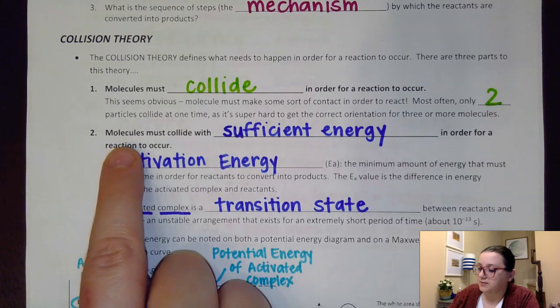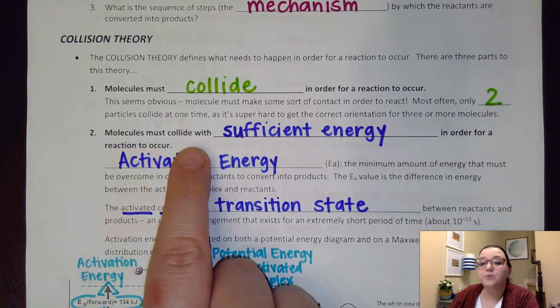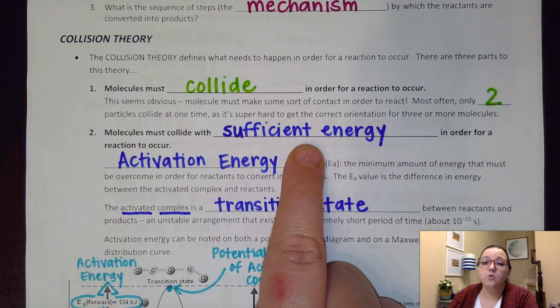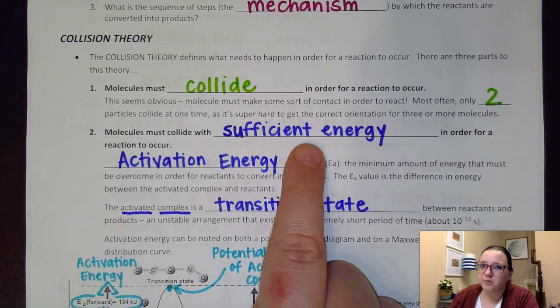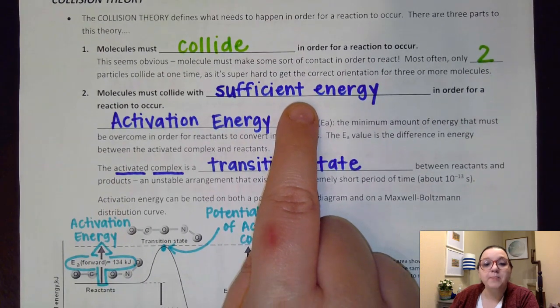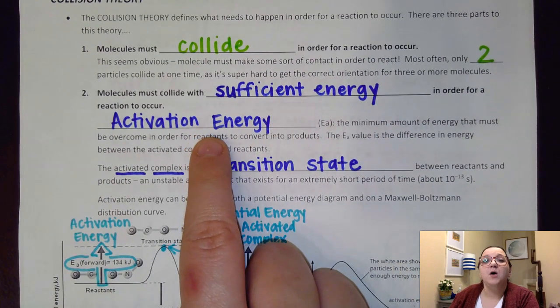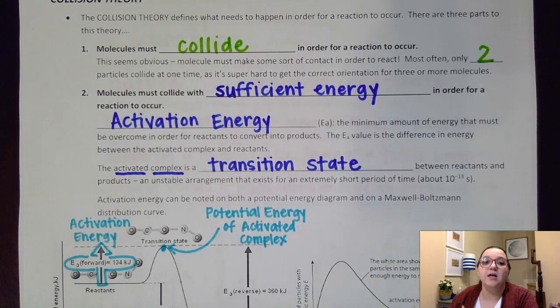So the second part to the theory says molecules must collide with sufficient energy in order for reaction to occur, and this term hopefully is going to sound familiar to those of you who took pre-AP, and that is activation energy. What is the minimum energy that you must overcome in order for those reactants to convert into products?